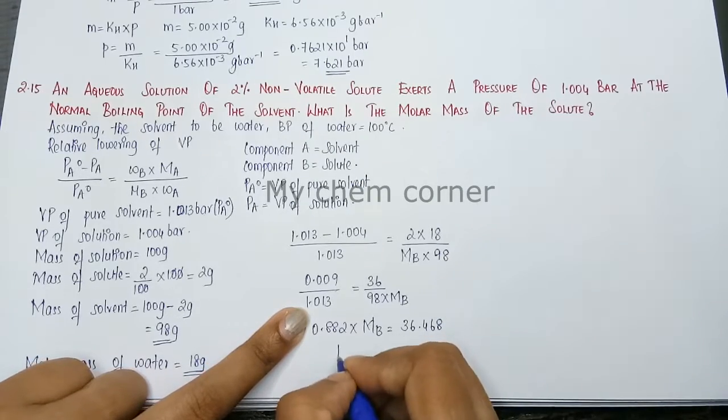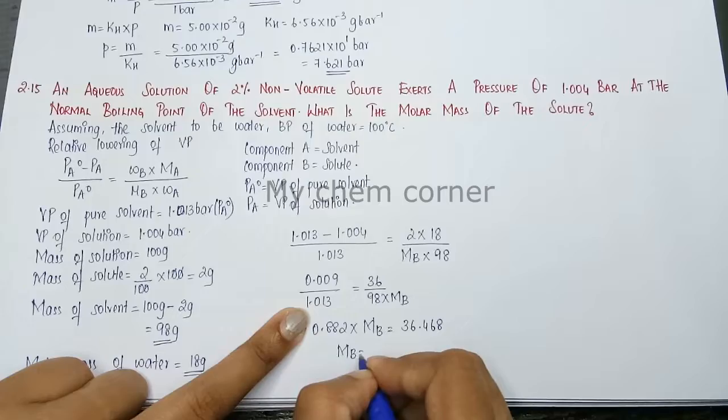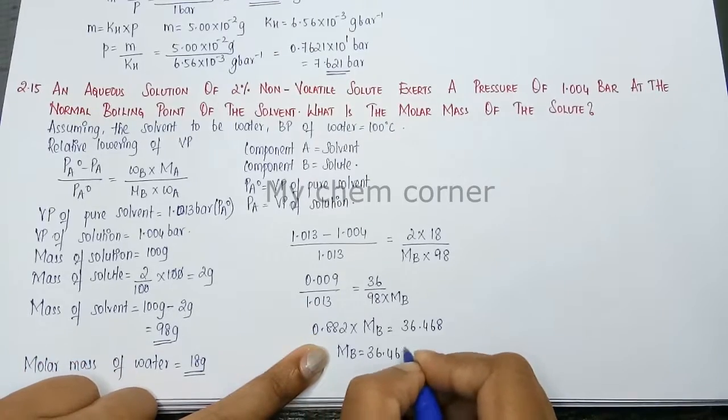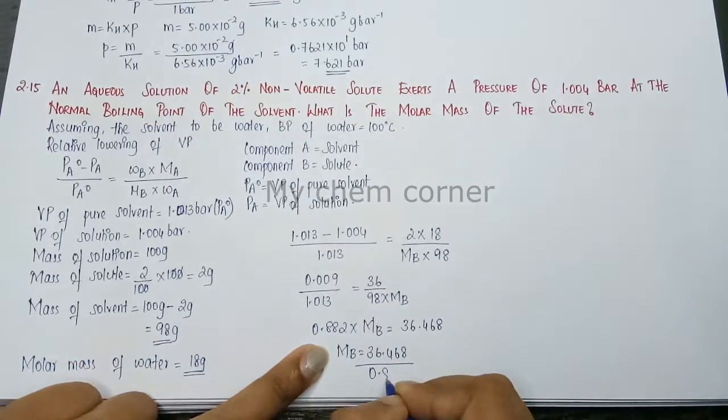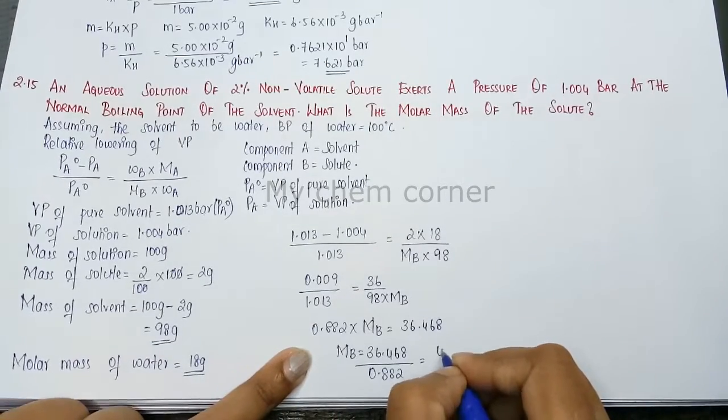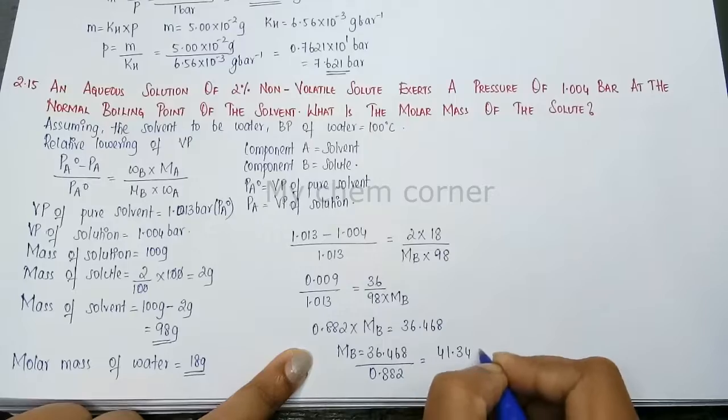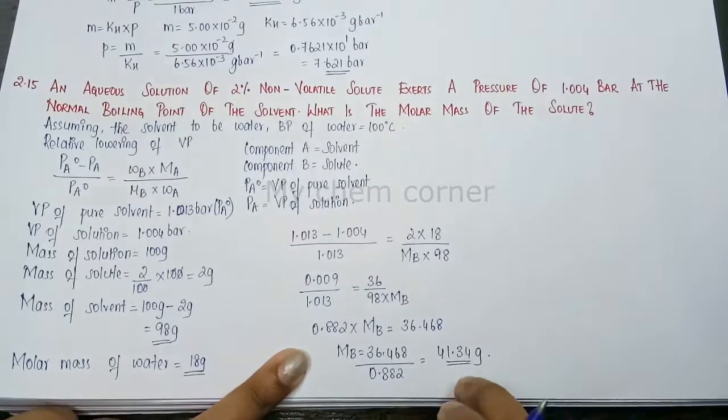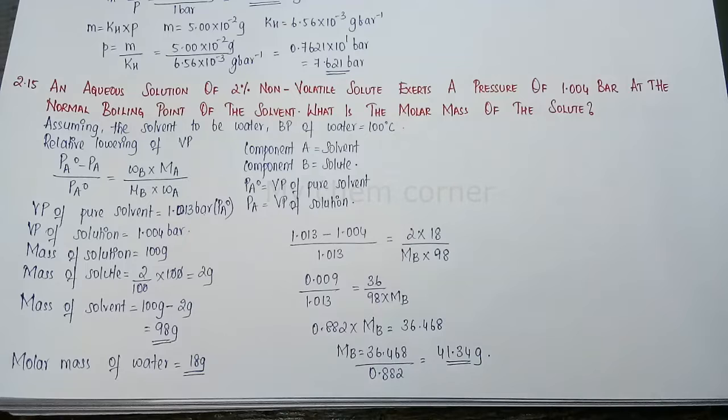Easily you can calculate what is mb. So mb is equal to 36.468 divided by 0.882. When I divide it I will get 41.34 grams. That is going to be the molar mass of the solute.